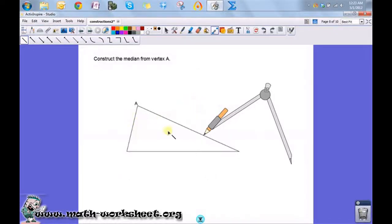I want to construct the median of this triangle from vertex A. A median connects the midpoint of a side with its opposite angle.